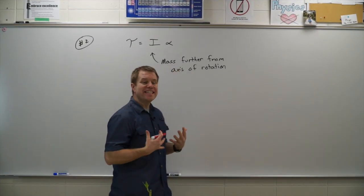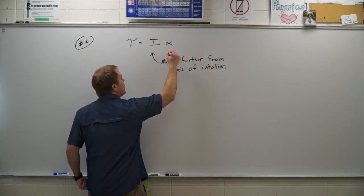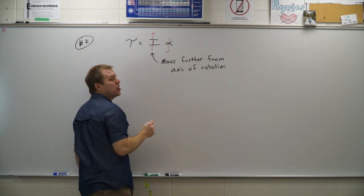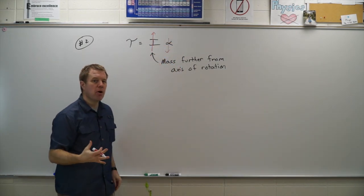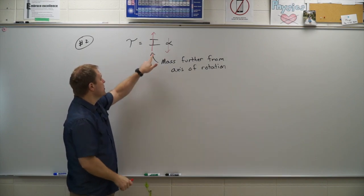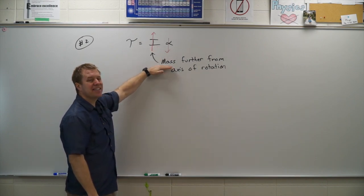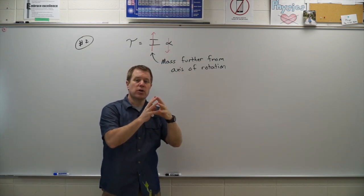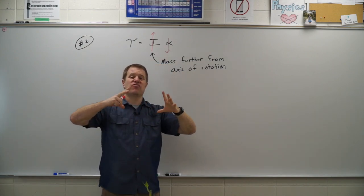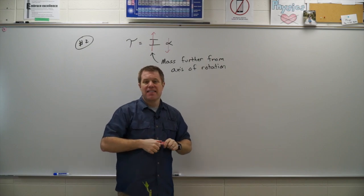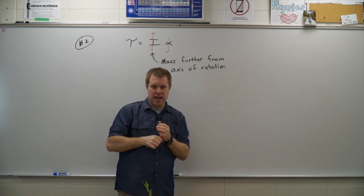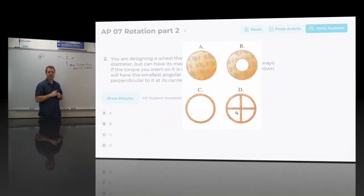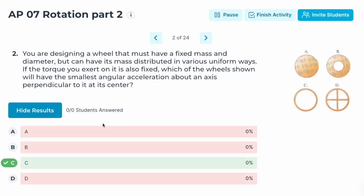Given the same torque, we want the one with the smallest angular acceleration, so that's going to be the one with the largest moment of inertia. The moment of inertia gets larger if the mass is further from the axis of rotation. So we want the one where mass is as far out as possible — that is the thin-walled cylinder-looking one. Correct answer: C.